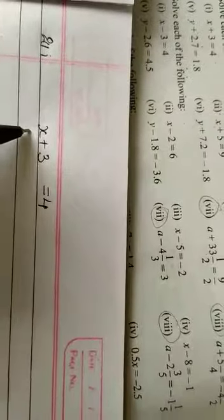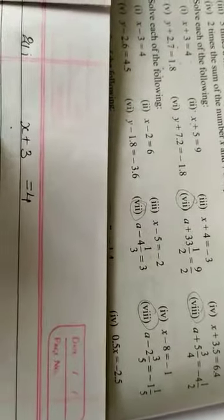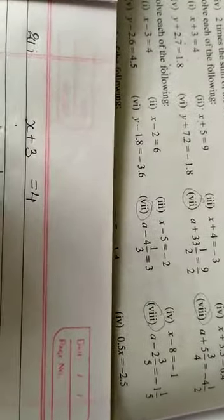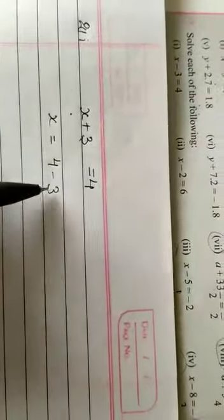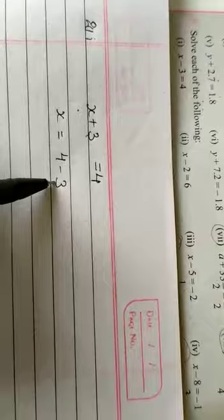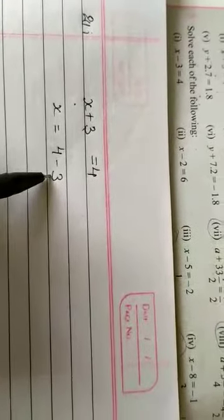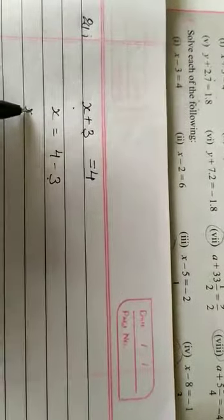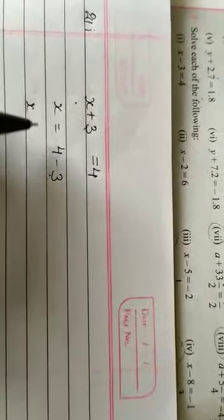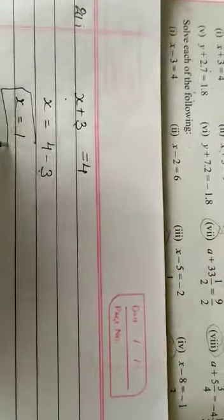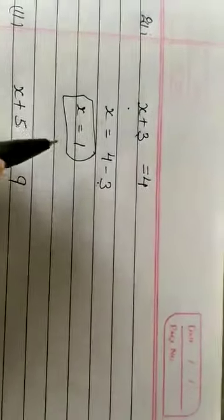First part: x plus 3 equals 4. We have to find the value of x, so we write x equals 4 minus 3. This 3 becomes negative when we take it to the right hand side of the equation. We get x equals 4 minus 3 equals 1, thus the value of x is 1.